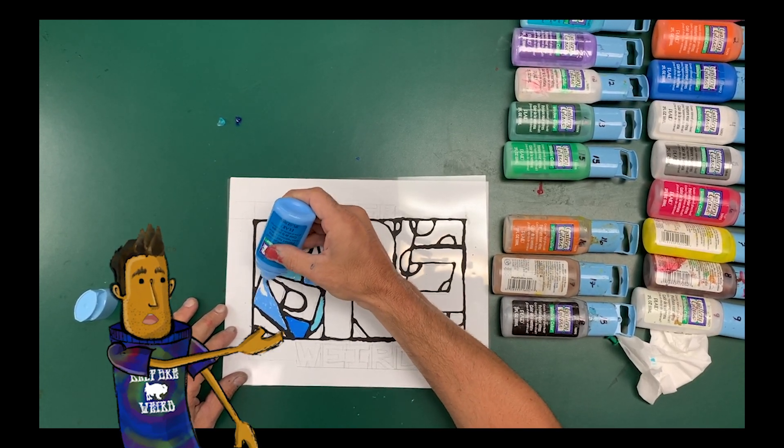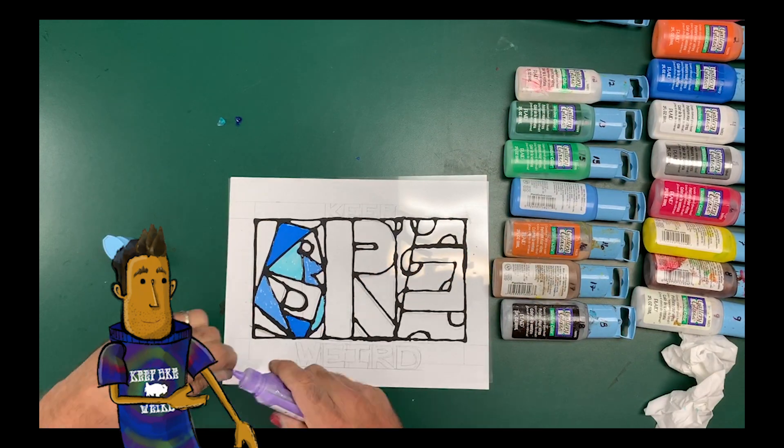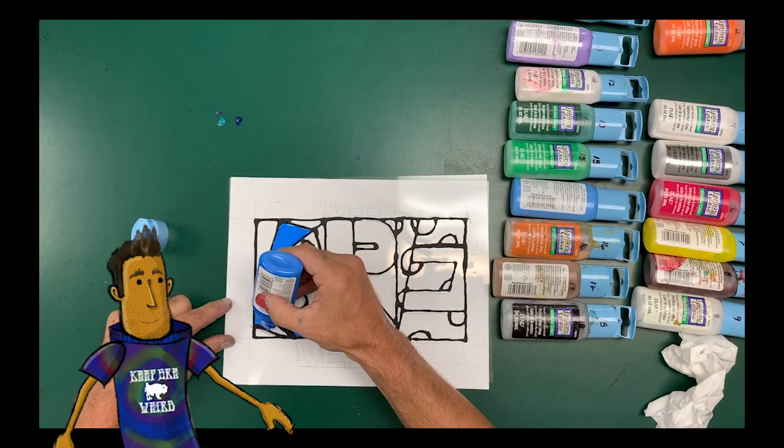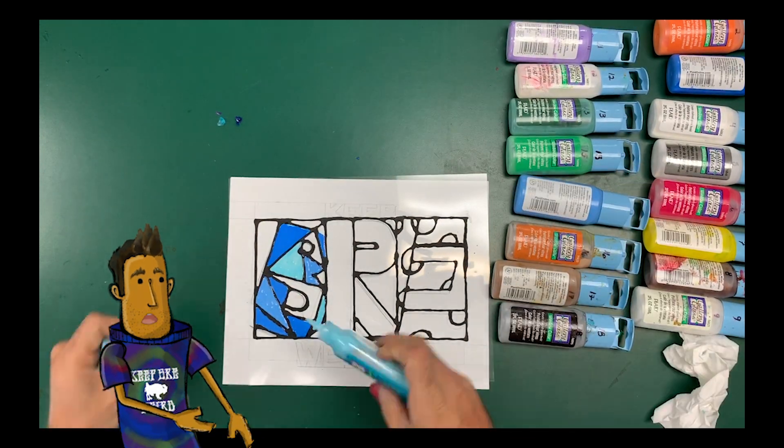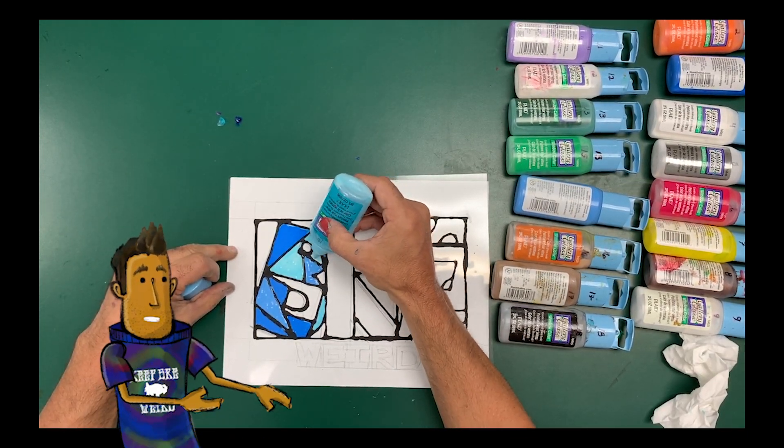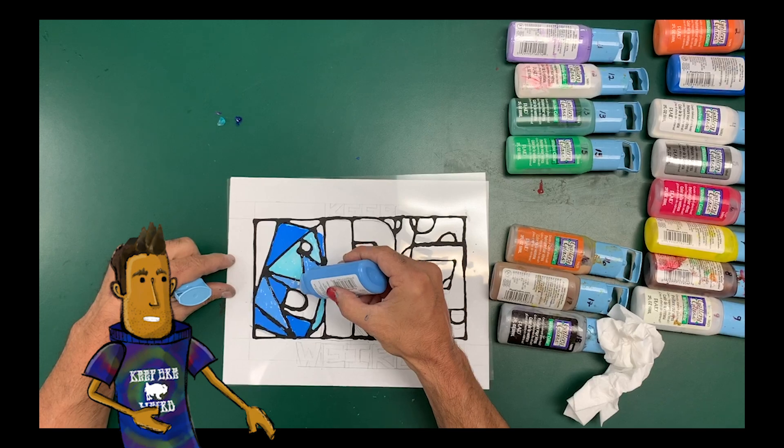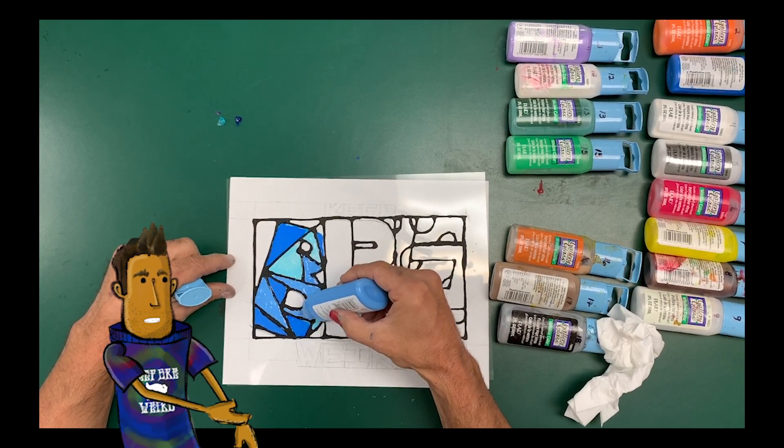I did the B with all different kinds of blues. You have about 20 colors to choose from. And when you paint with these colors, they kind of work the exact same way that your painting with glue works. You have to tip it upside down and kind of squeeze it.